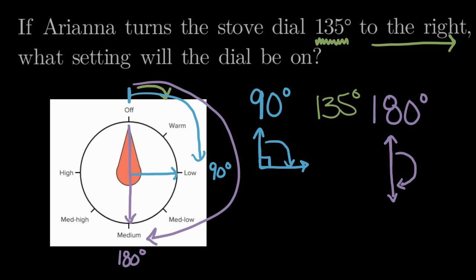And what setting is in the middle of the 90 and the 180? Right here in the middle of them is medium low. So turning our stove dial 135 degrees to the right, we'll set our stove to medium low.